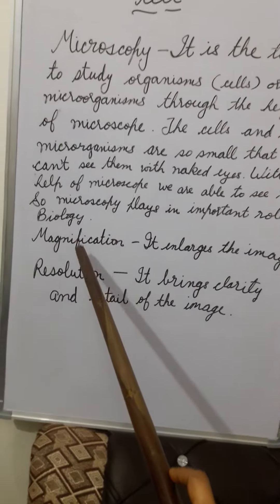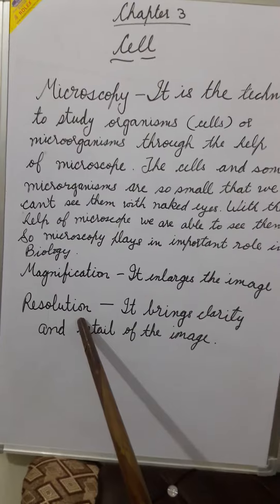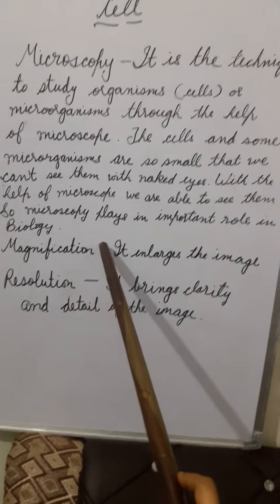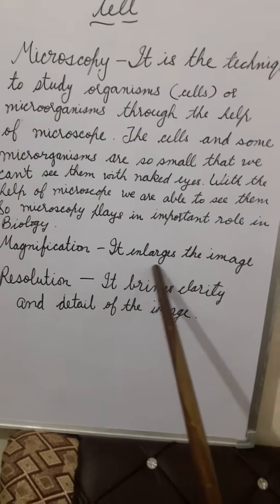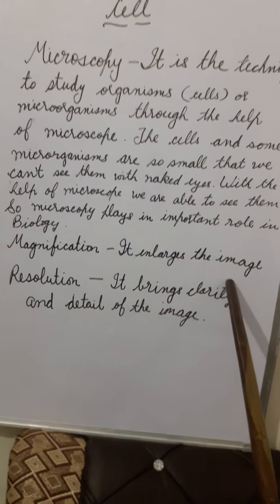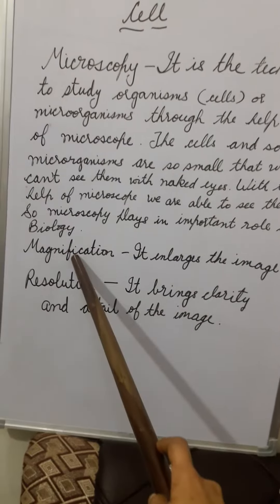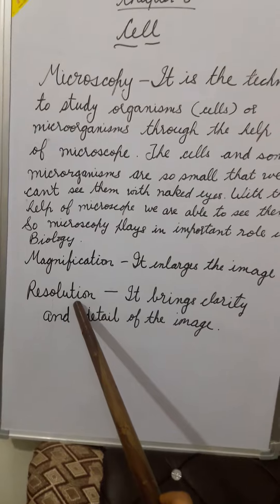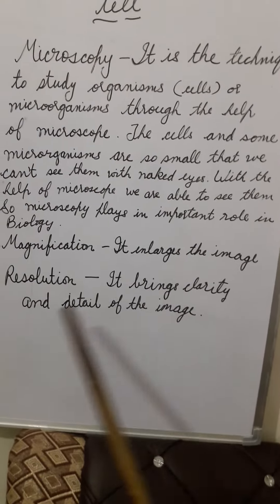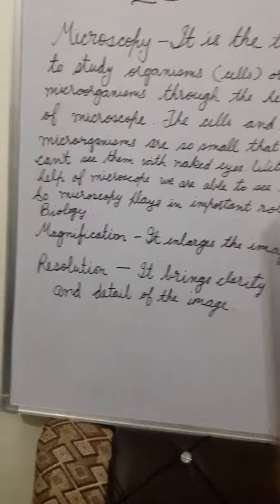These two things are very important for a microscope: magnification, which means enlargement of the image — how much enlarged image we want to see — and resolution, which brings the clarity and the detail of the image.